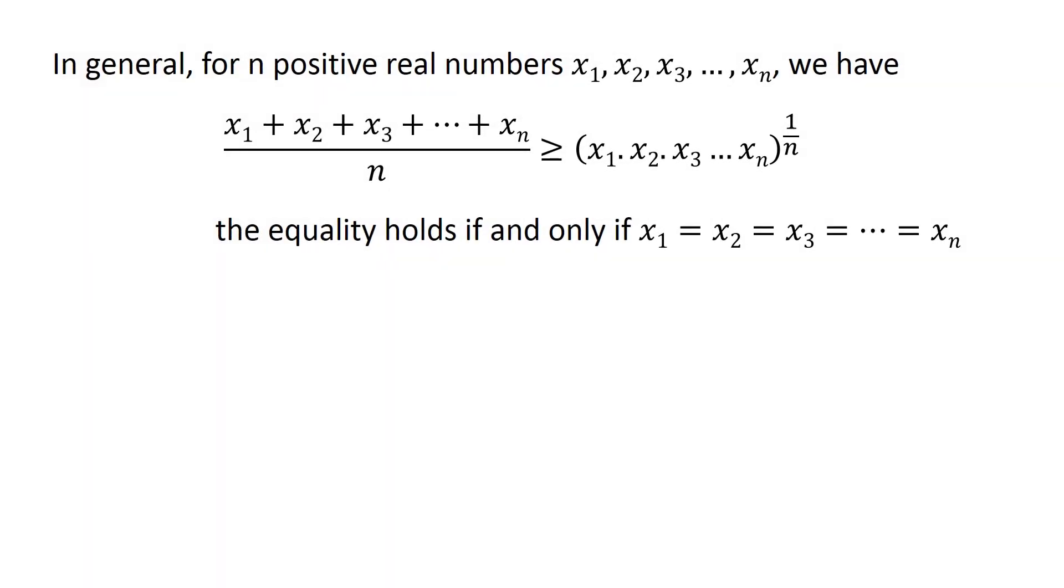In general, for n positive real numbers x1, x2, and so on up to xn, we have arithmetic mean of these numbers is greater than or equal to geometric mean of these numbers. The equality holds if and only if x1 equals x2 equals x3 and so on up to xn.